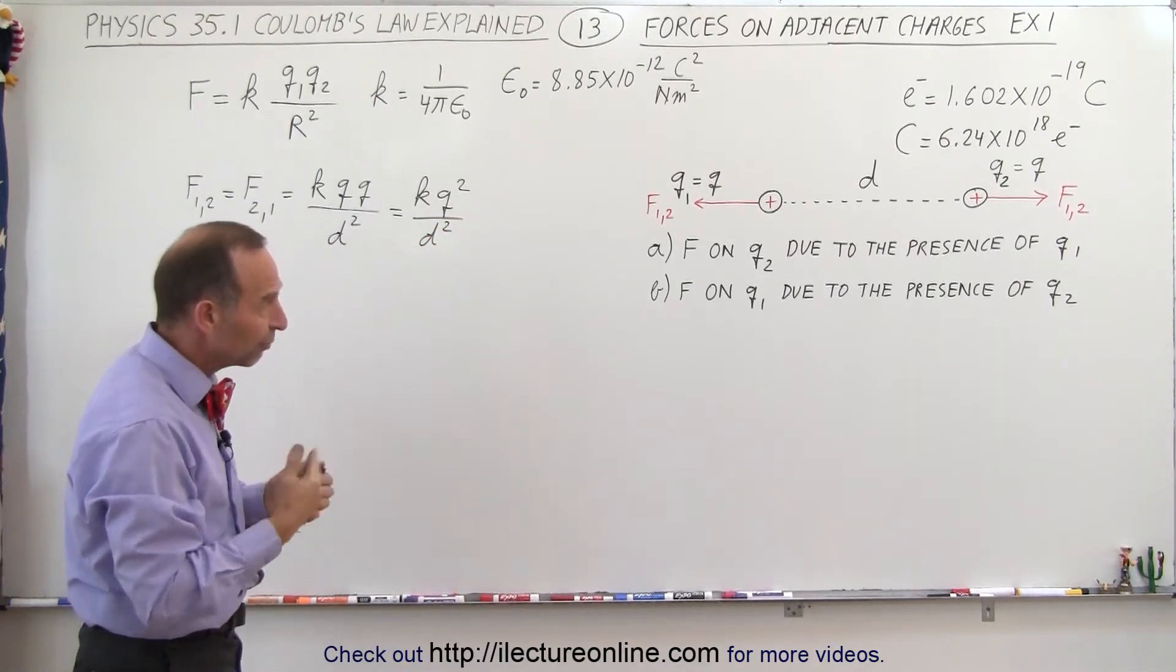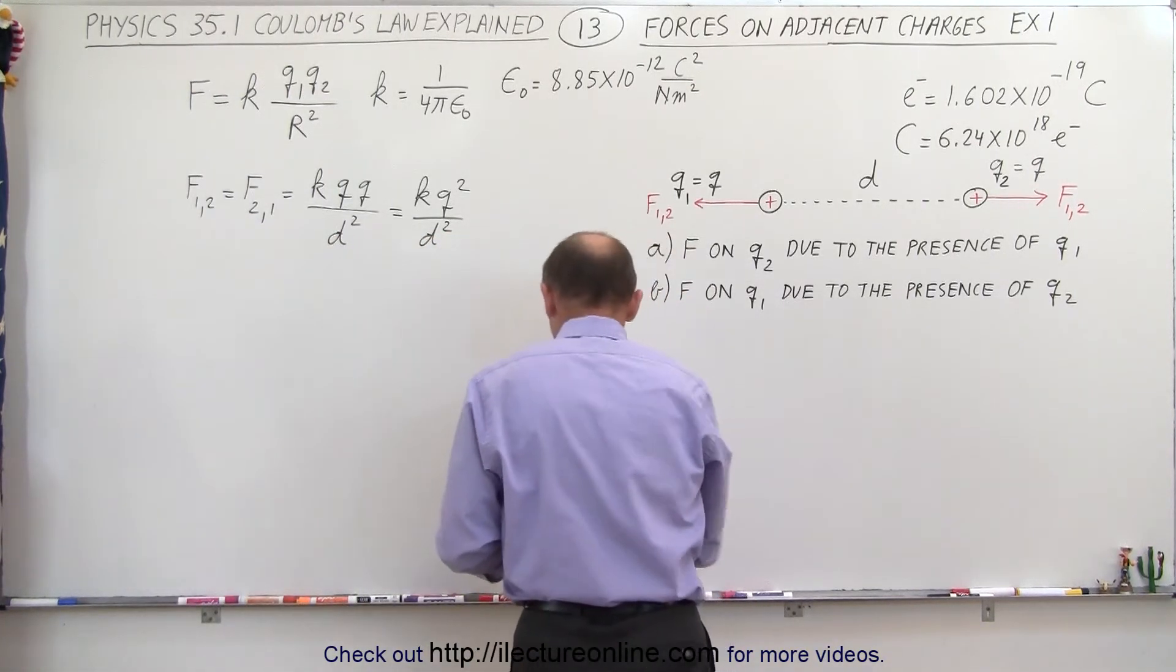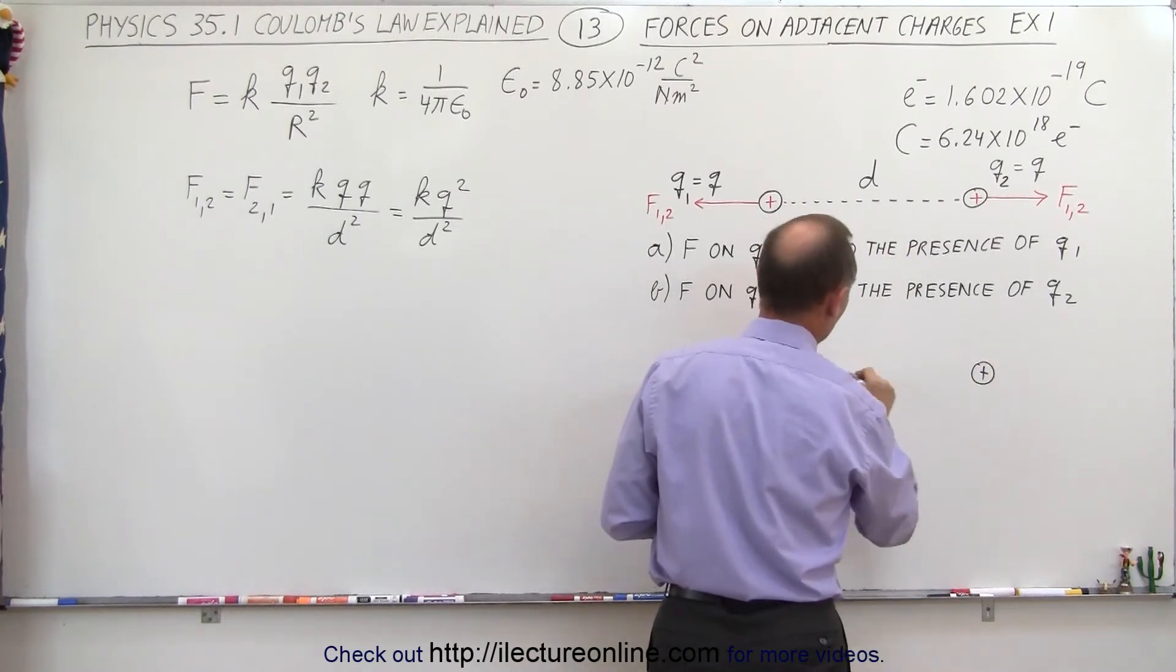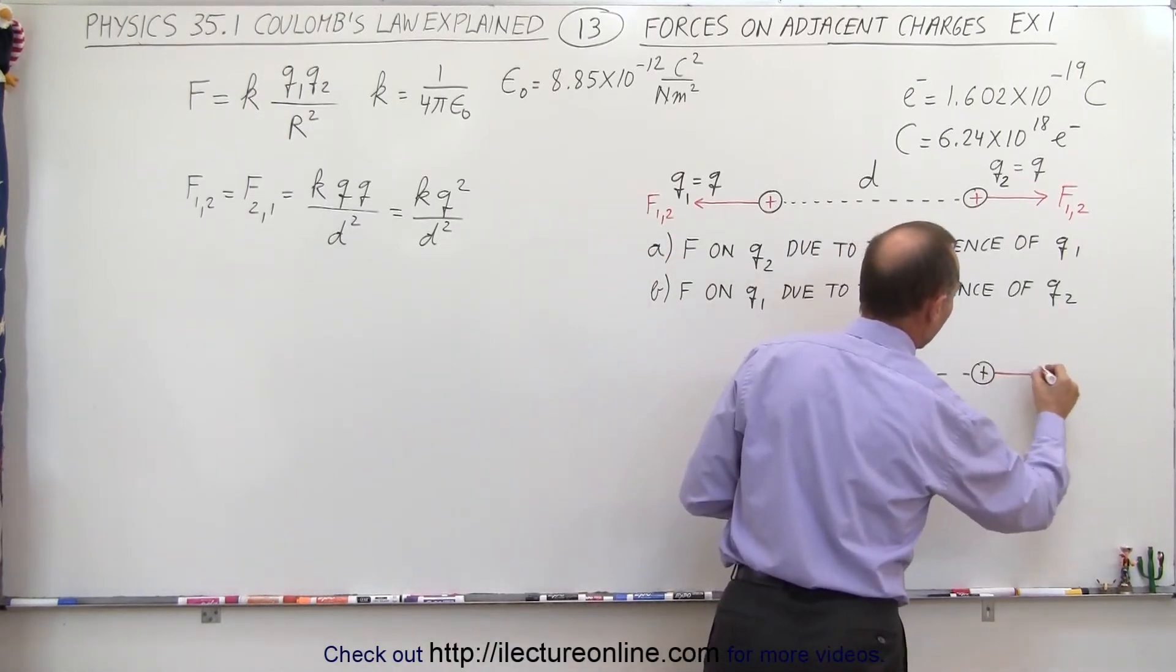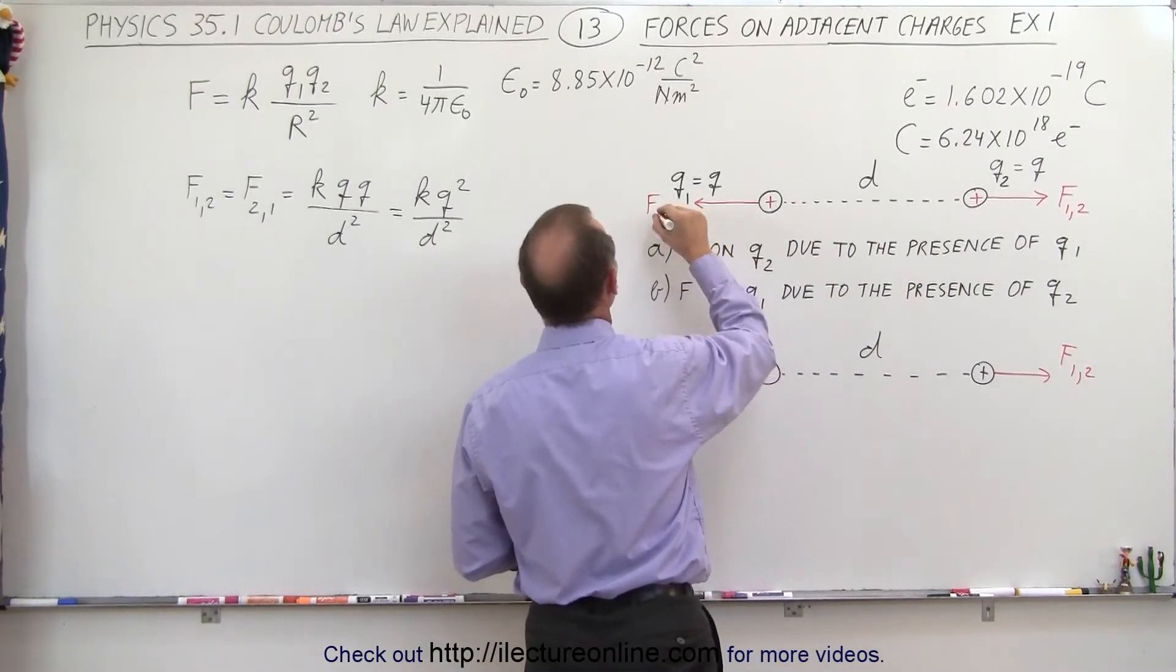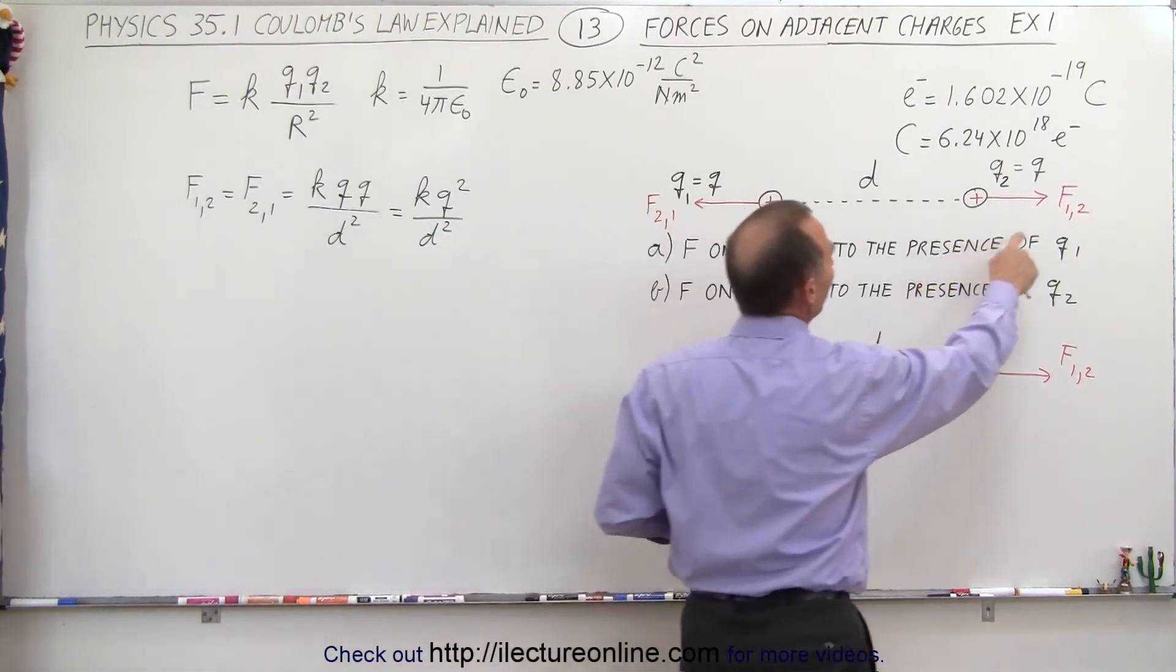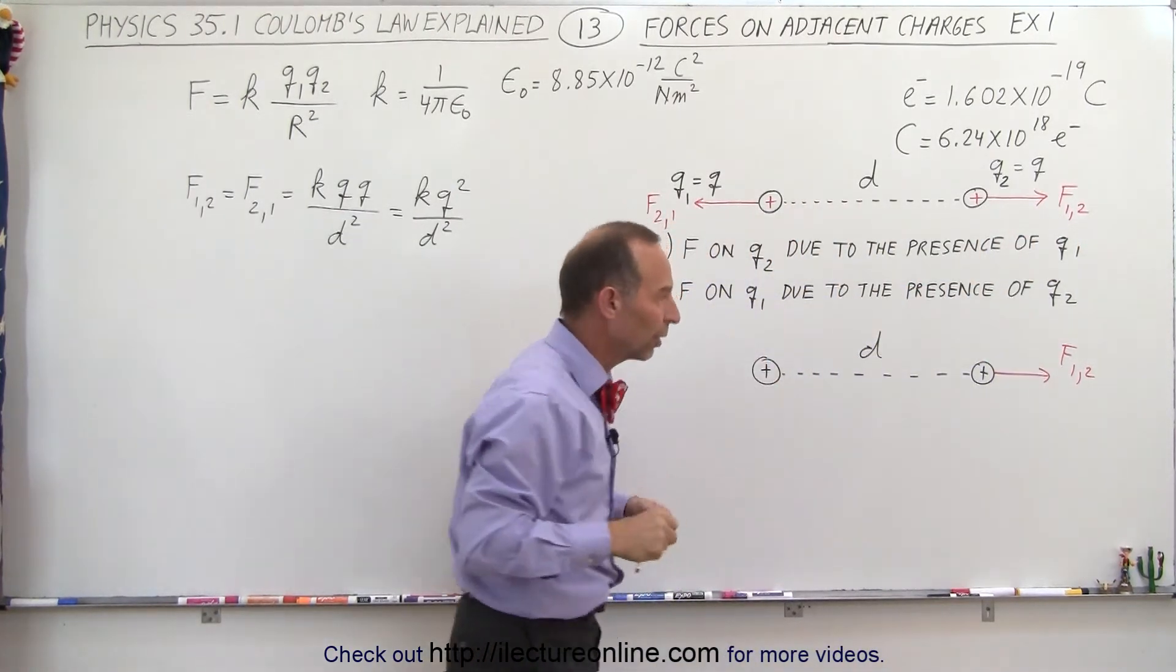Now, these are not scalar quantities, these are vector quantities. So let me redraw the two charges. We have a charge over there, we have a charge over here, we have a distance d between the two. And so we can say that the force here f1,2, and this force f2,1, they are equal in magnitude, but they are indeed pointing in the opposite direction. This is the force on 2 due to the presence of 1, this is the force on 1 due to the presence of 2.